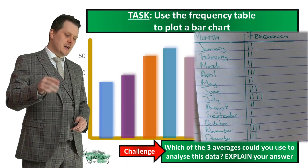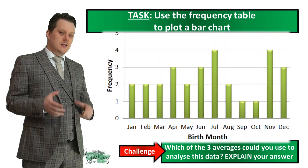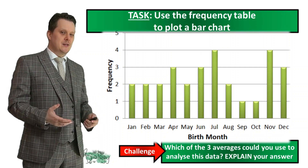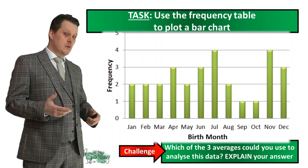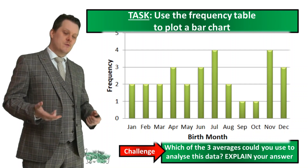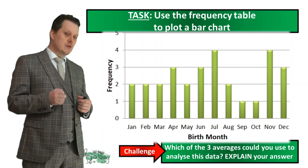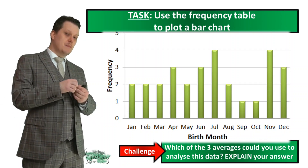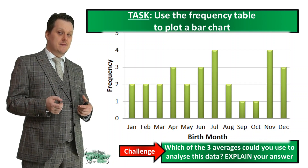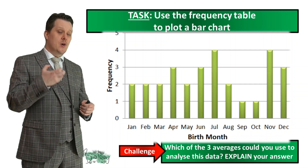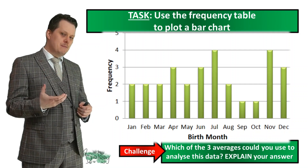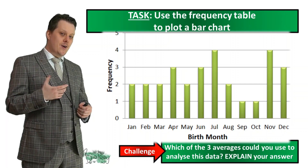Let's have a look at what the bar chart would look like. You can see that we don't get that distribution curve we have with continuous data. Which of the three averages can we use? We can't use the mean or the median because we don't have numerical values — we can't add them together and divide, or put them in numerical order. But we can look for the most common, and that's easy to see from the bars. July and November are the most common — they are the mode.